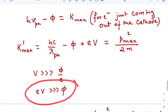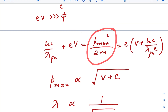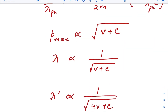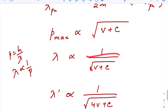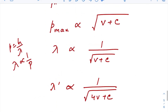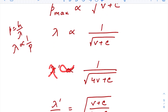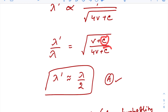So hc/lambda_ph + eV ≈ p_max² / (2m) = e·(V + constant). We can see that p_max, the momentum of the maximum kinetic energy electron, is directly proportional to the square root of the applied potential difference plus some constant. Since lambda = h/p, lambda is directly proportional to 1/√(V + c). For the first statement, if V is made four times, lambda prime is proportional to 1/√(4V + c). Ignoring c, lambda prime = lambda/2, so lambda_e is approximately halved. Option A is correct.